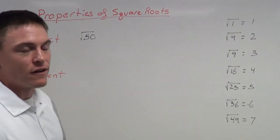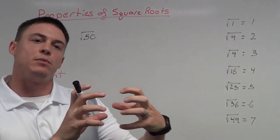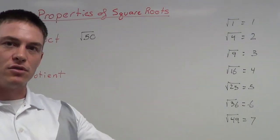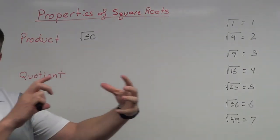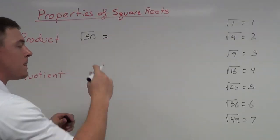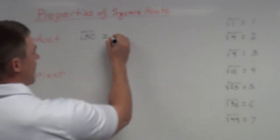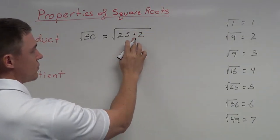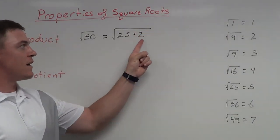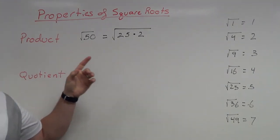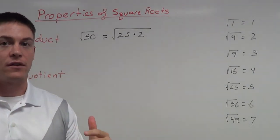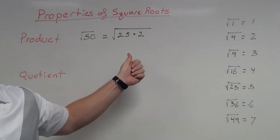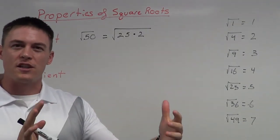So what I can do is simplify this and get it down to a nicer, neater number by using the product property. I'm going to take 50 and split it up using multiplication. Instead of writing this as 50, I can rewrite this as the square root of 25 times 2 — notice that multiplication dot. 25 times 2 is the same thing as 50, so I haven't really changed much. The numbers look different, but it's still 50 underneath there.